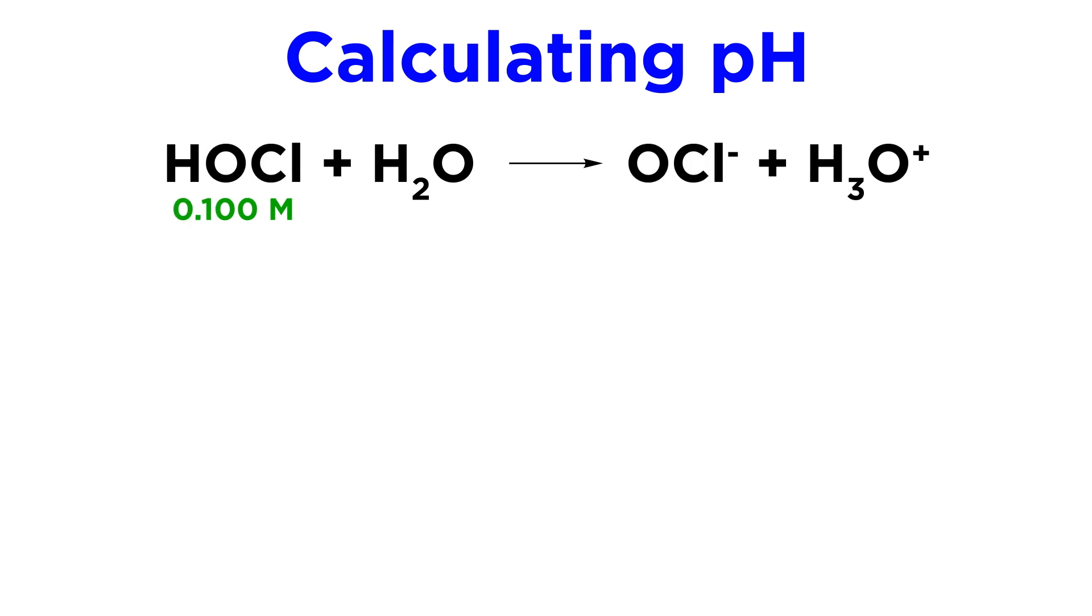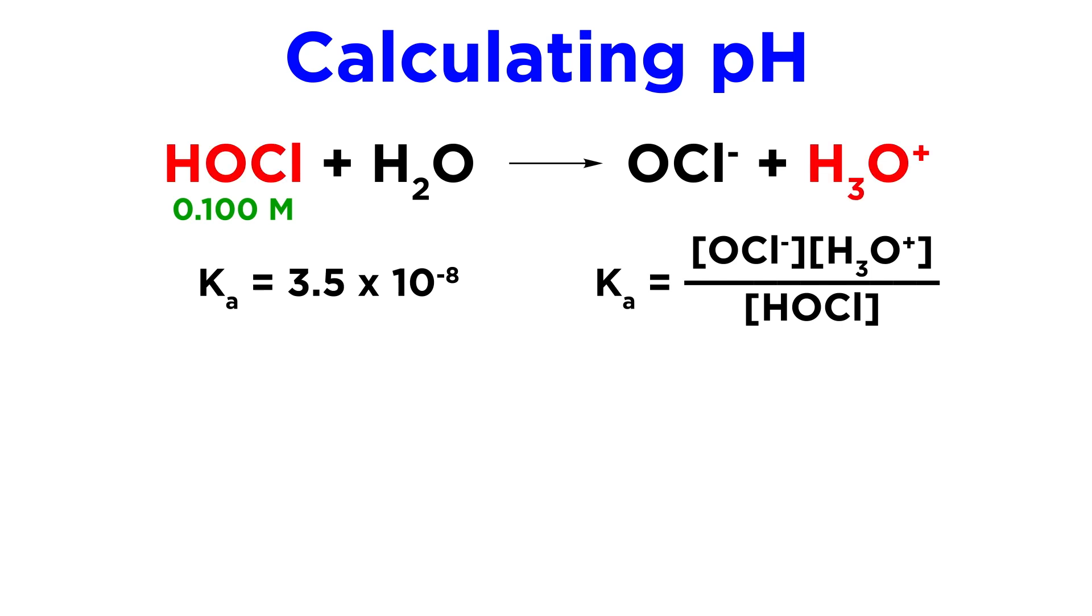Let's try one more. What is the pH of a 0.1 molar aqueous solution of hypochlorous acid, or HOCl, which has a Ka of 3.5 times 10 to the negative 8? Again, the more relevant equilibrium is that of hypochlorous acid, as this will produce much more hydronium than the autoionization of water, which has a Kw of 10 to the negative 14. So we can consider only this acid-base equilibrium.